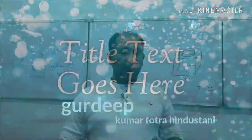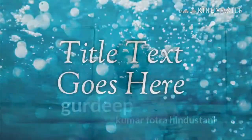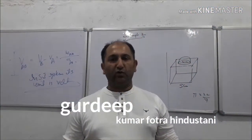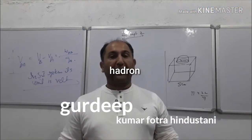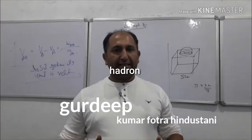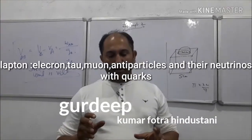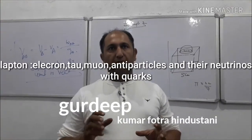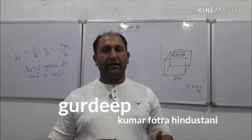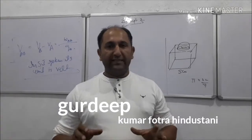We have two kinds of elementary particles: first, the fermions, and second, the bosons. Fermions are those particles which have half-integral multiples of spin. Bosons are those particles which have zero or integral multiples of spin. Bosons act as exchange particles, while fermions include the electron, tau, and muon particles.